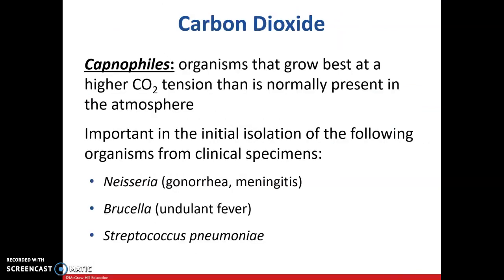Capnophiles are organisms that grow best in higher CO2 environments than is normally present in the atmosphere. This is important in the initial isolation of certain organisms from clinical specimens. Examples of capnophiles include Neisseria, Brucella, and Streptococcus pneumoniae.